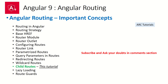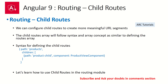Today we are focusing on child routes. Child routes allow us to configure meaningful URL segments which are logically related. The child routes array follows the same syntax as the routes array we configure in routing — we have the parent route followed by children, and it can have the same details like redirect-to, component, default route, etc. I'll show you a hands-on example and give you use cases of how it's really useful.